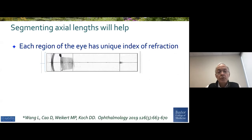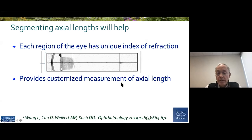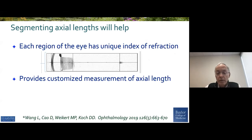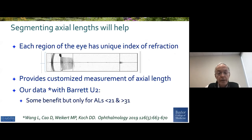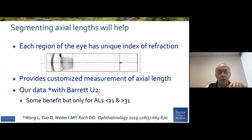We've also looked at measuring the eyes by segments, looking from the aqueous as opposed to the lens, as opposed to the vitreous cavity. That would enable us to really customize the measurement of axial length instead of measuring it with one unified unique index of refraction. But with the Barrett Universal 2, there were some benefits, but really only for eyes at the extreme — under 21 and over 31 millimeters — which tells me that Dr. Barrett has done a great job of blending in other things for these long and short eyes.